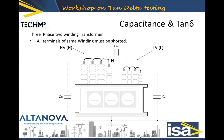In our next video we will go a little bit more in depth on this. You can think about what the capacitances would be in a transformer with a primary, secondary, and tertiary winding, and in the next video we will show you the correct answer to that question.